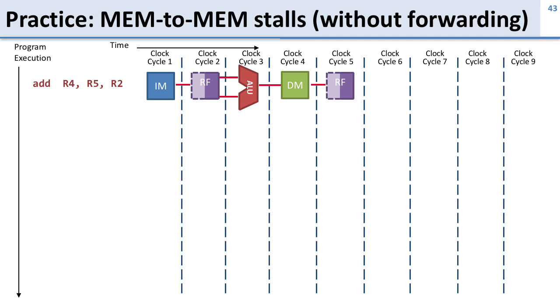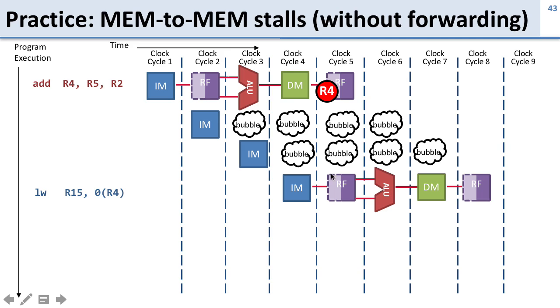Okay, so how do we do this without forwarding? Without forwarding, we've got our first instruction here which is going to do our add, and it's going to get the results ready here in the last cycle when we're writing it in. Now we're going to have to put in a bunch of delays here because our next instruction needs to use the result of that. Remember, we need two cycles of delay if we don't have any forwarding.